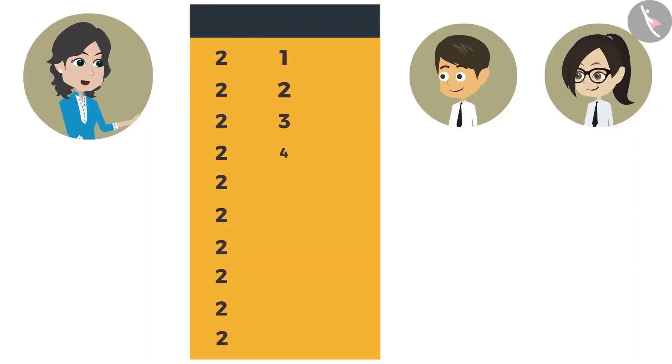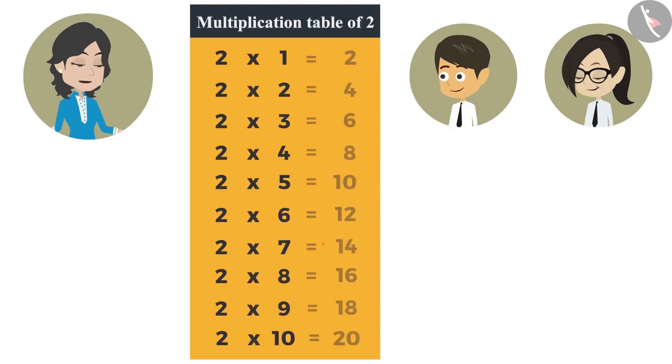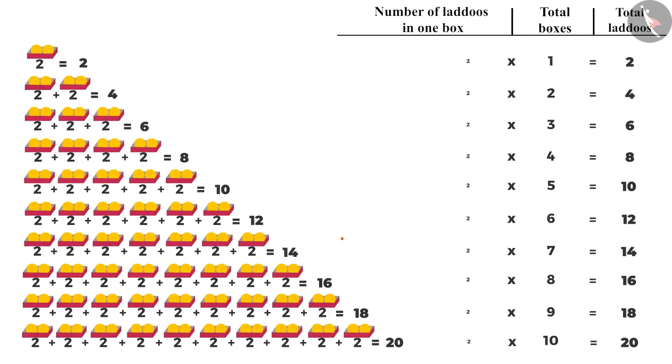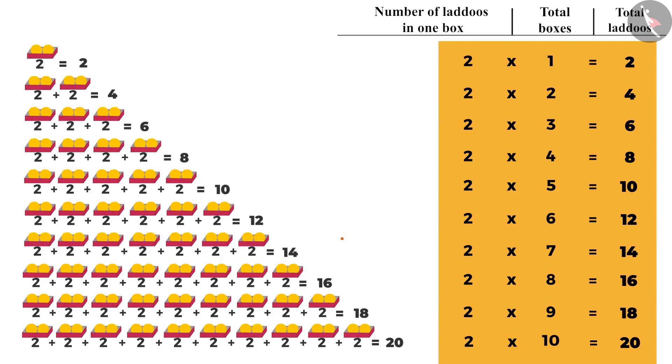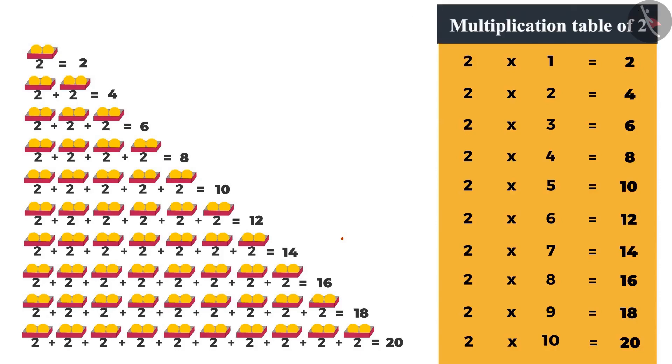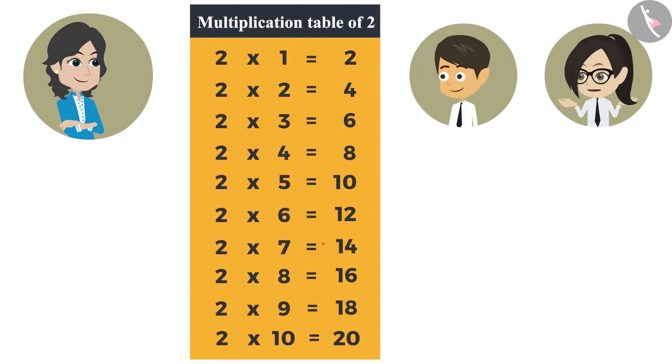The list obtained when you multiply a number by 1 to 10, it is called the multiplication table of that number. Just like you have multiplied 2 by 1 to 10 and obtained this list. This is the multiplication table of 2. Do we need to memorize it?